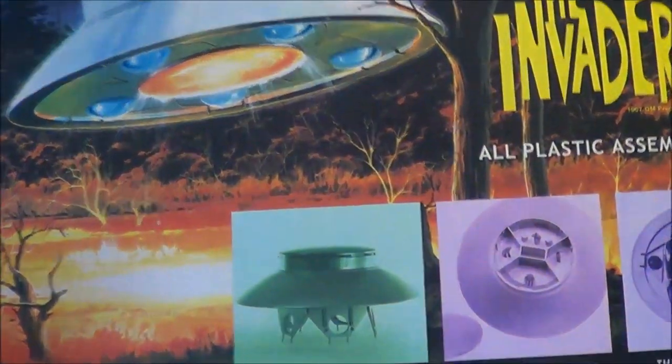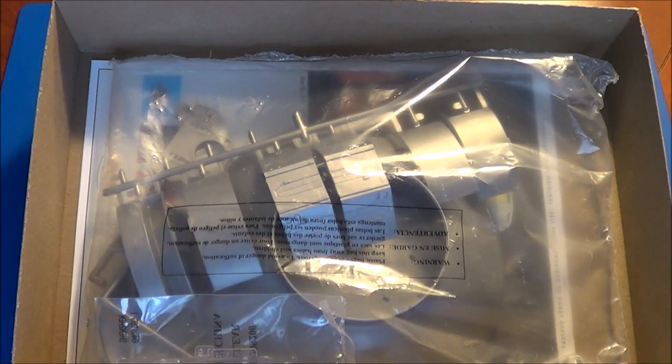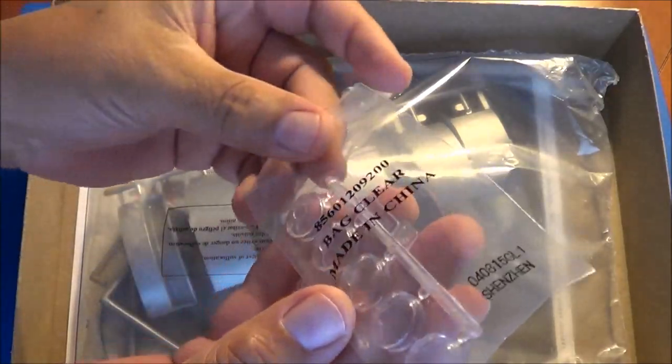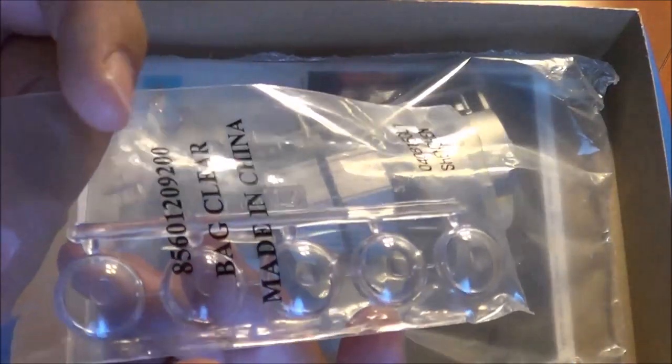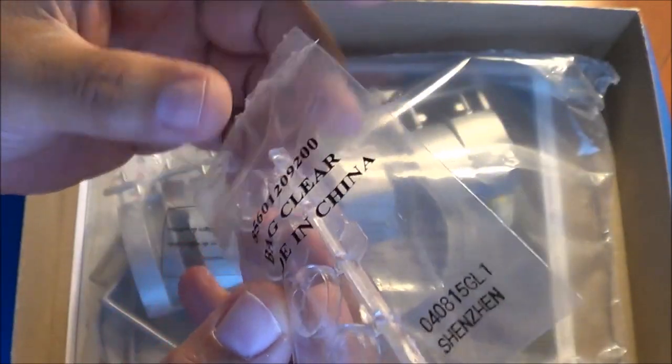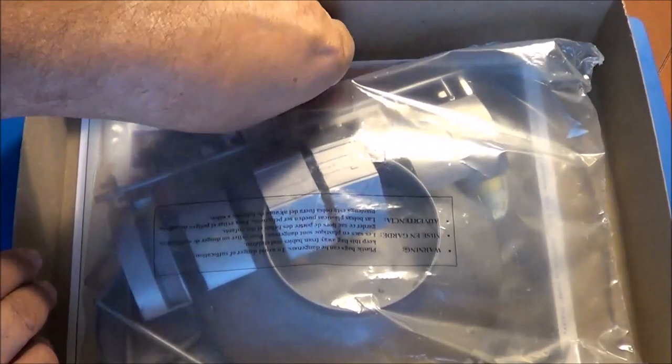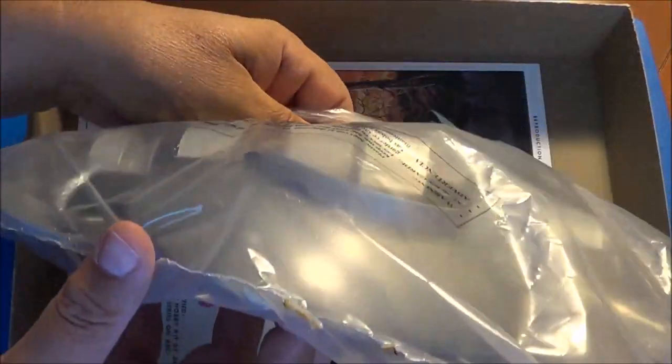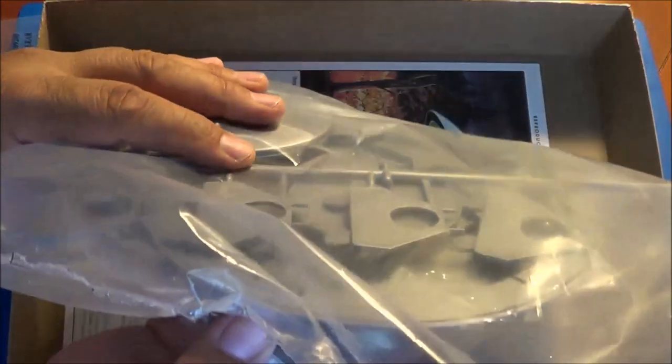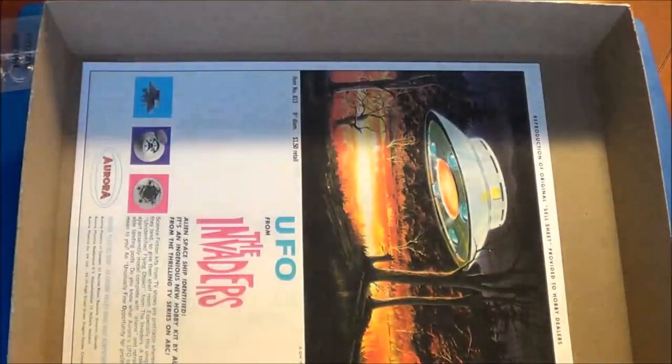See what this bad boy looks like inside. We do have a nice set of clear parts here. I'll take those out of the bag here in a second. Another bag of all your silvery, grayish, silver colored parts. Looks just like the Monogram one, which it is. It's just a re-pop of the old Monogram Aurora kit. All in one part here.